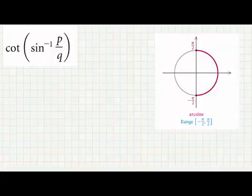To simplify this composition, we will use the fact that inverse sine of p over q is an angle on the right half of a circle.